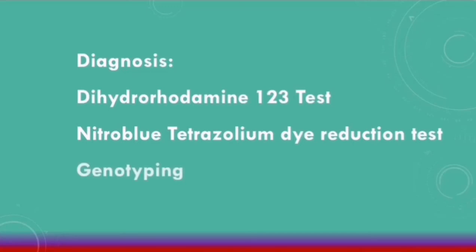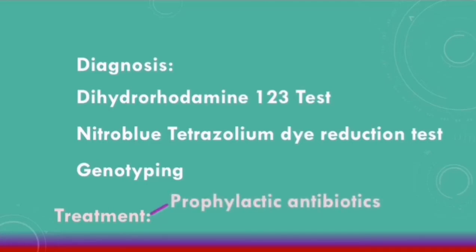Finally, genotyping can be done to confirm the diagnosis. In terms of treatment, prophylactic antibiotics are given due to the high risk of recurrent infections, particularly from catalase positive organisms. Interferon gamma is also given because it has been shown to help stimulate the respiratory burst in phagocytes.